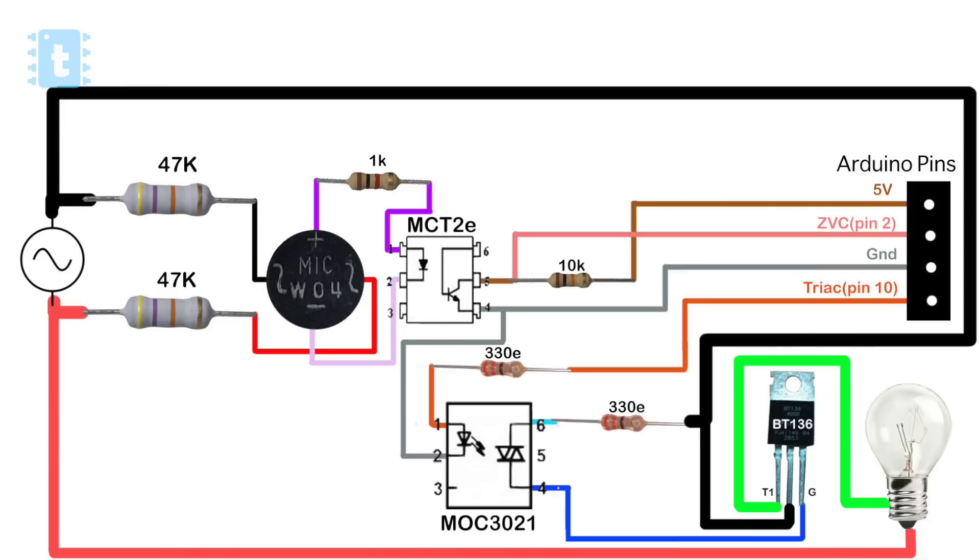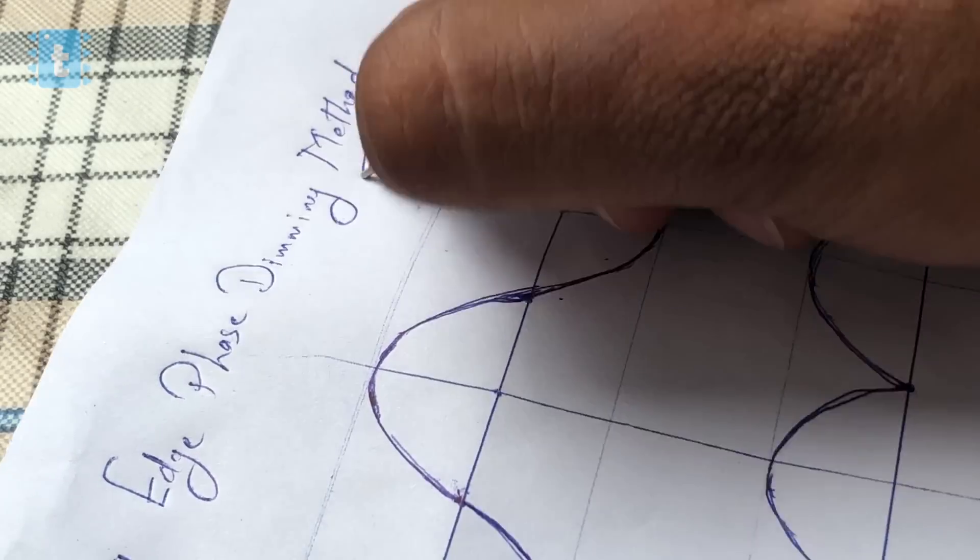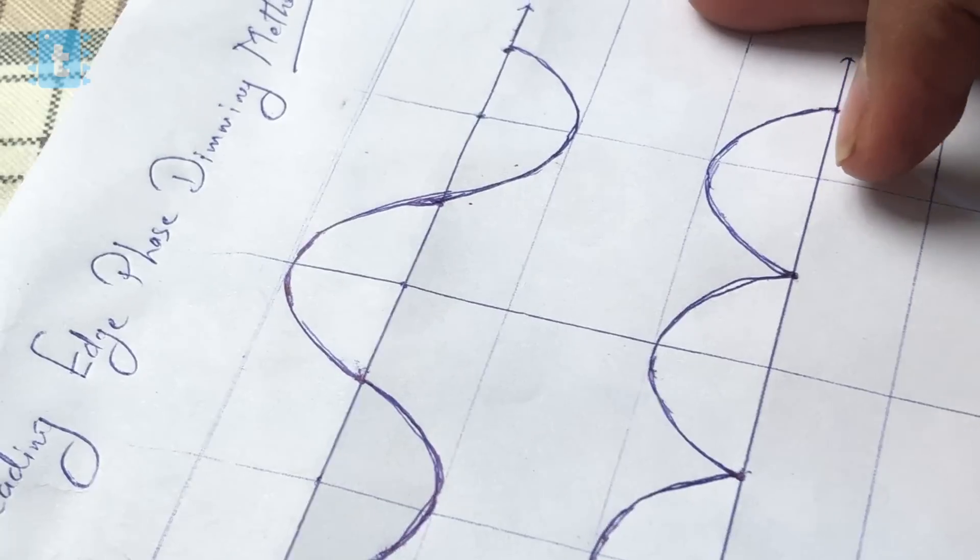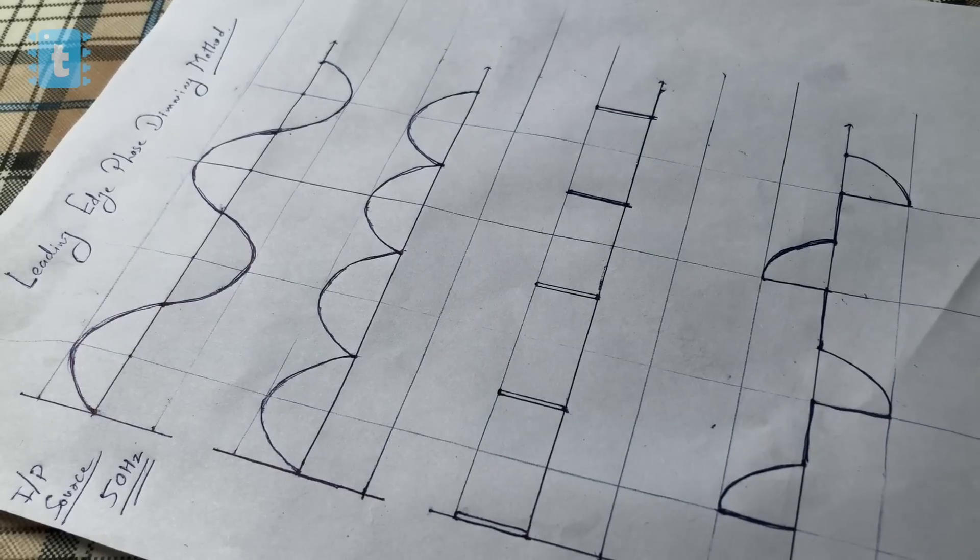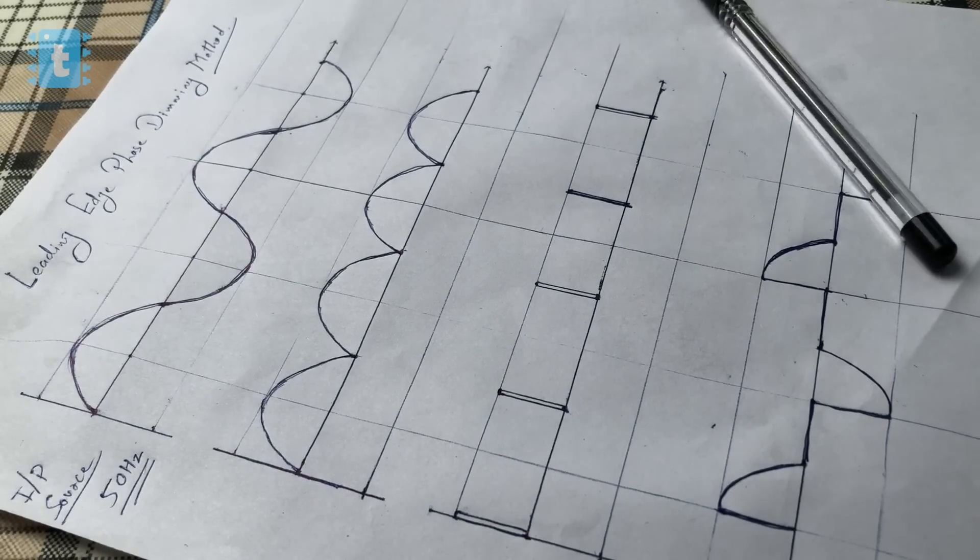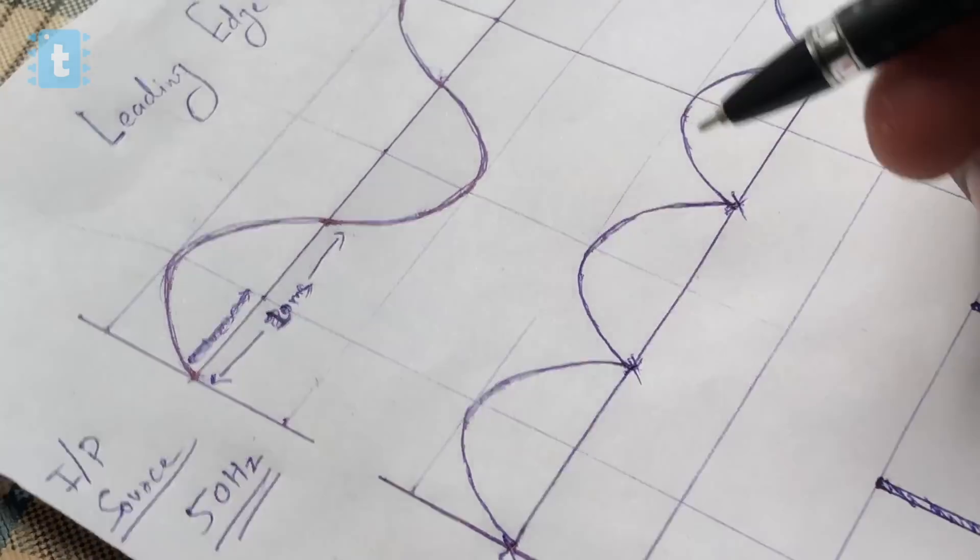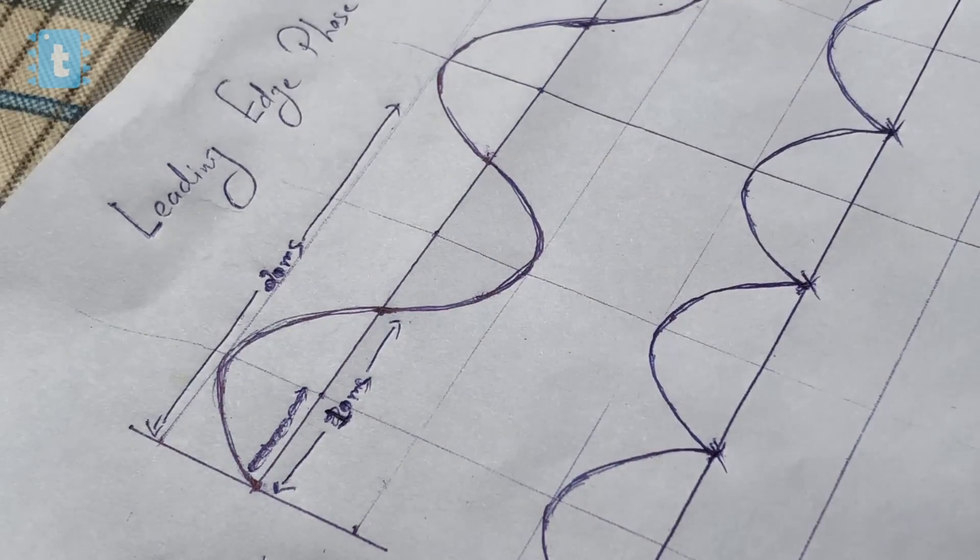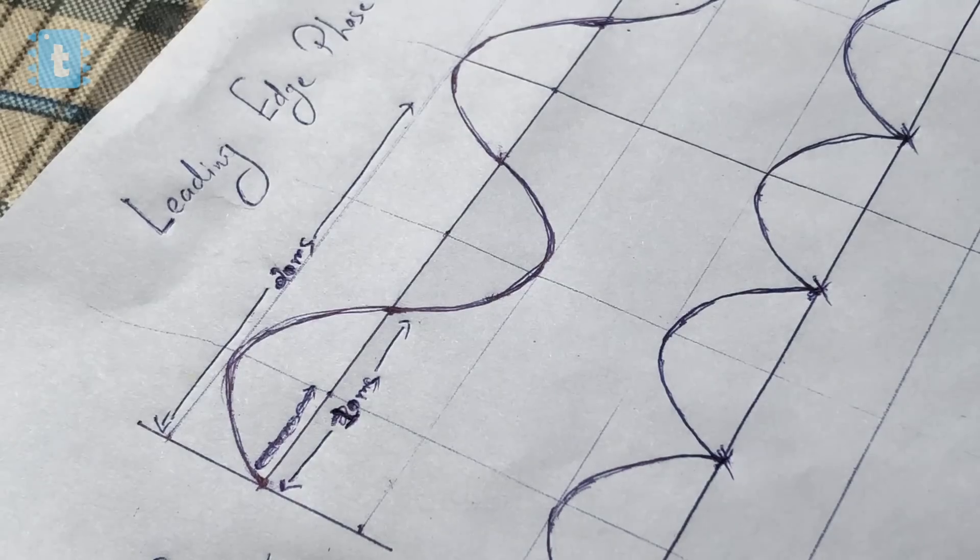Now let's observe how this circuit dims the appliances. There are many methods of AC dimming but in our case we will be using this leading edge phase dimming method. Here I don't have an oscilloscope so I'll try to explain you by drawing the diagrams. So this is the power input AC source at 50 hertz. Now if we calculate the time, then each cycle is of 20 milliseconds and each half cycle is of 10 milliseconds.